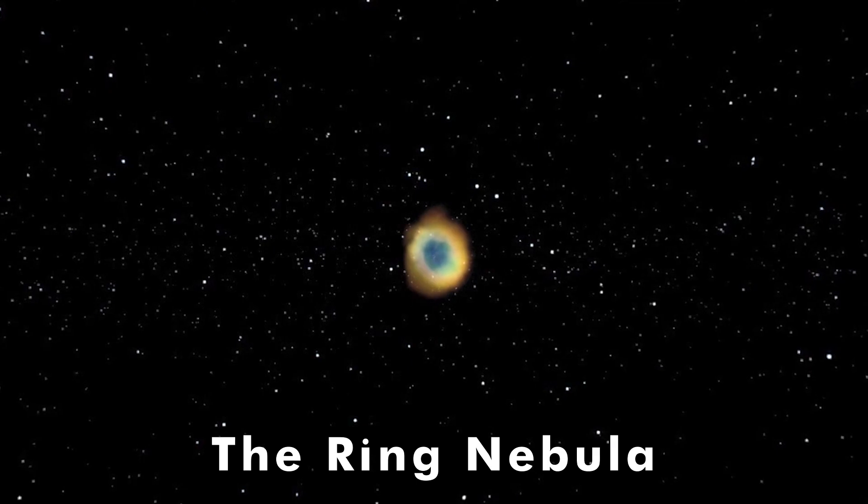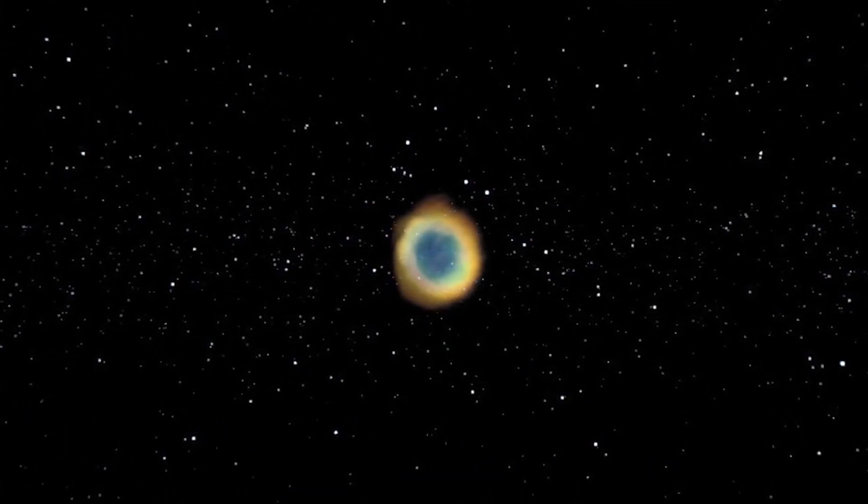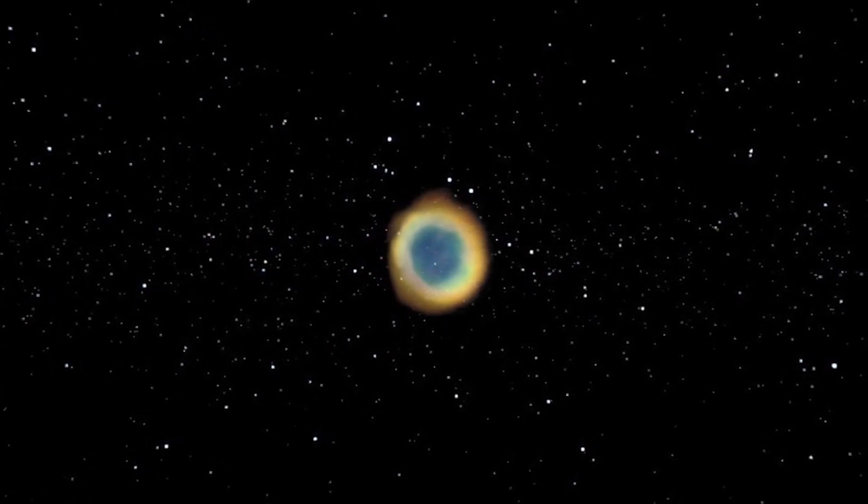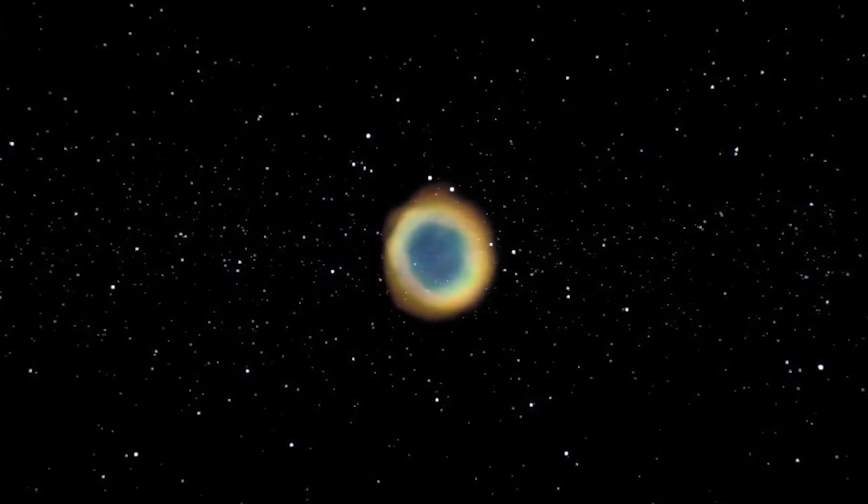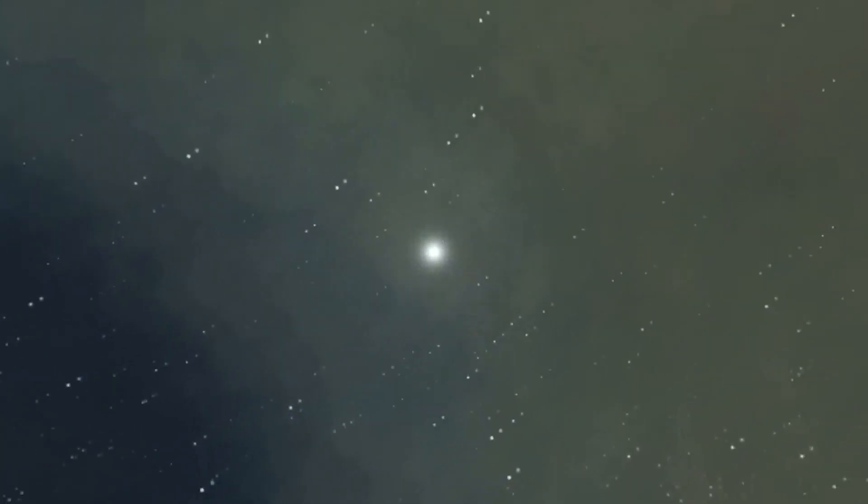M57, or the Ring Nebula, is a planetary nebula, the glowing remains of a sun-like star. The tiny white dot in the centre of the nebula is the star's hot core, called a white dwarf.